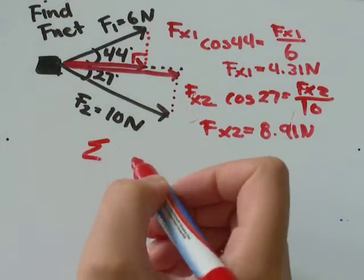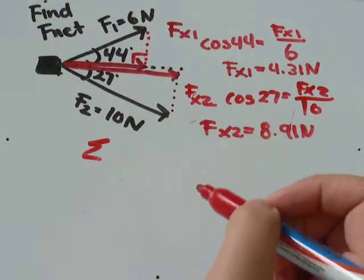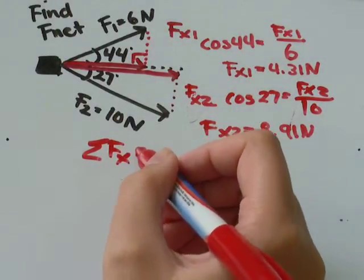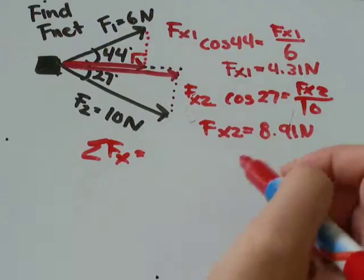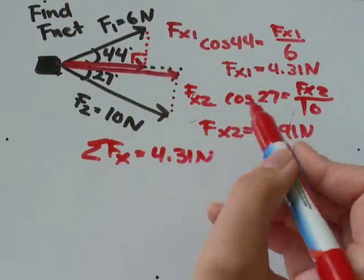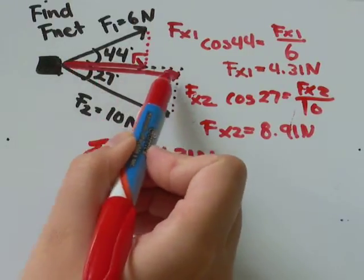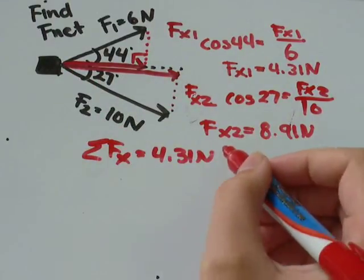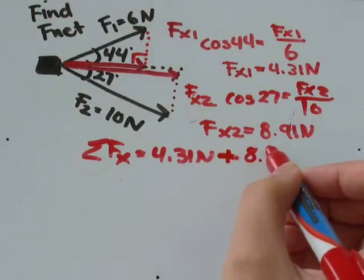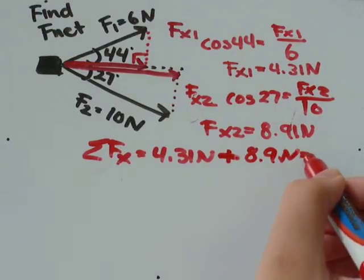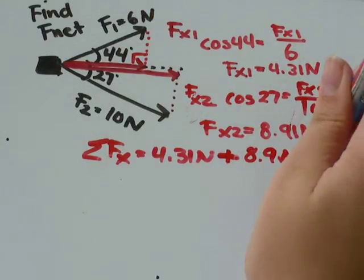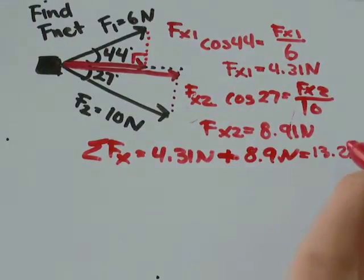So the sum, we use the Greek letter sigma for that. So the sum of the forces in the x direction is, the first one was 4.31 newtons. And then because the horizontal components of these vectors are traveling in the same direction, I'm going to add them. The other one was 8.9 newtons.